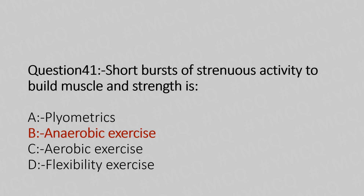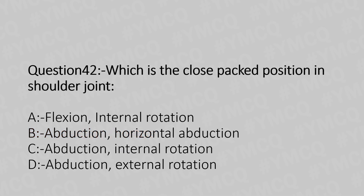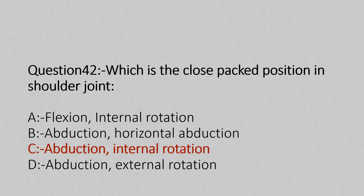Now let's move to post number 42. Which is the closed back position in the shoulder joint? Option A, flexion and internal rotation. Option B, abduction and horizontal abduction. Option C, abduction and internal rotation. Option D, abduction and external rotation. And the answer is Option C, abduction and internal rotation.